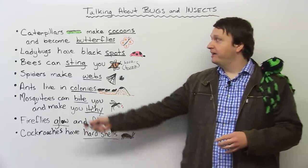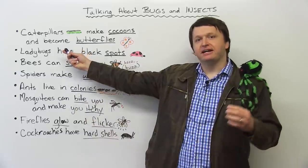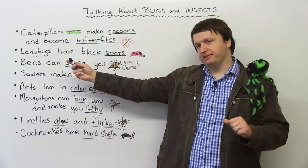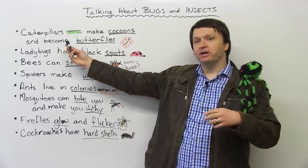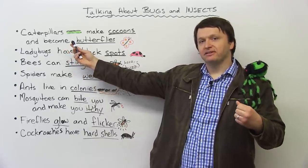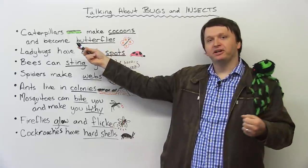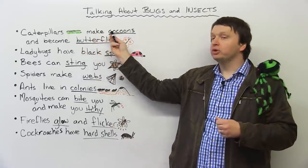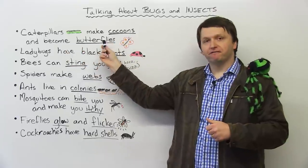So to begin, we have caterpillars. And we are going to focus on pronunciation a bit on this one too. So repeat after me, everyone: caterpillars. So what do caterpillars do? Well, they make cocoons and become butterflies.